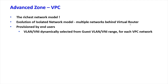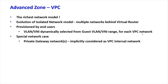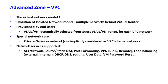VPC is the richest network model in CloudStack. It is provisioned by end users, and the VLAN is dynamically selected from the pool the cloud operator configured — one VLAN per VPC network, since there can be multiple networks, each on a dedicated VLAN range. There are special network cases such as the private gateway network, which is considered an internal VPC network.